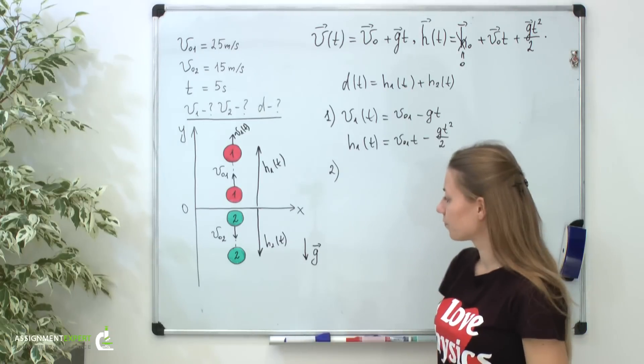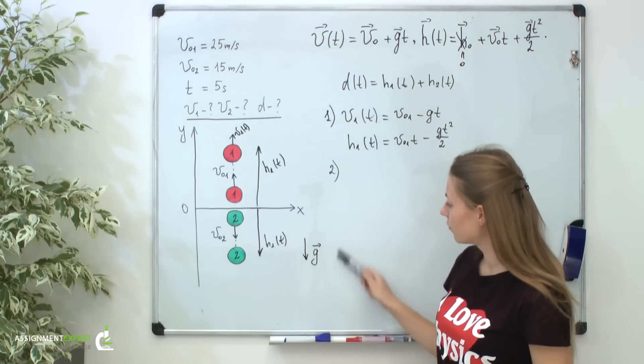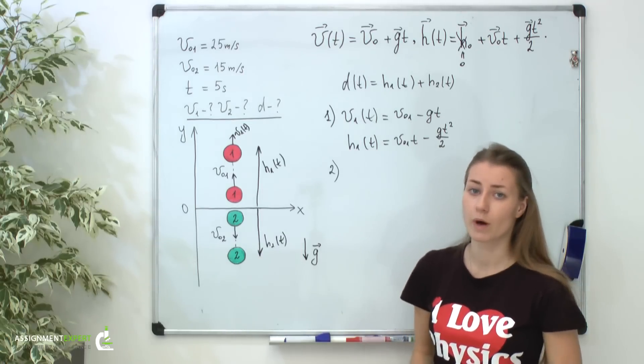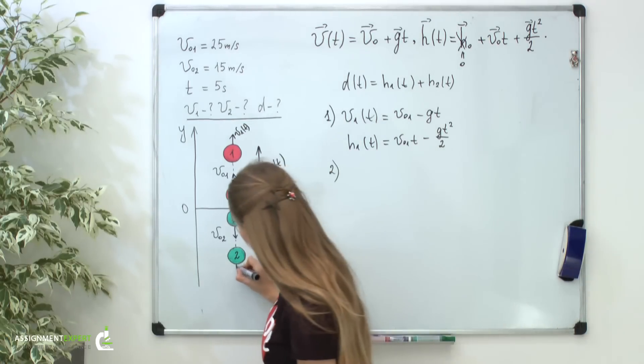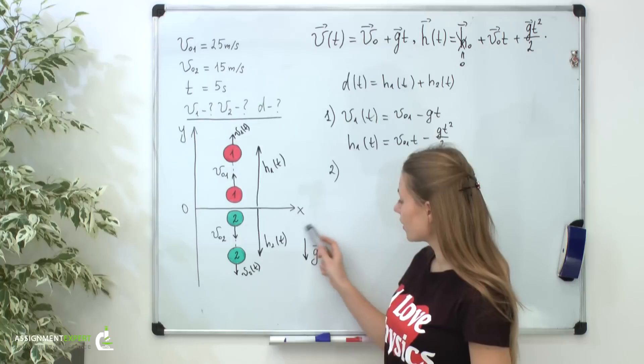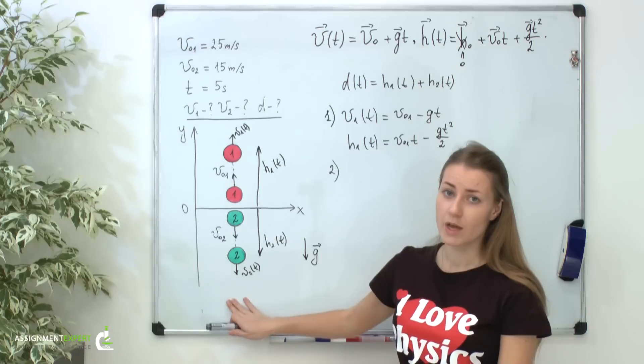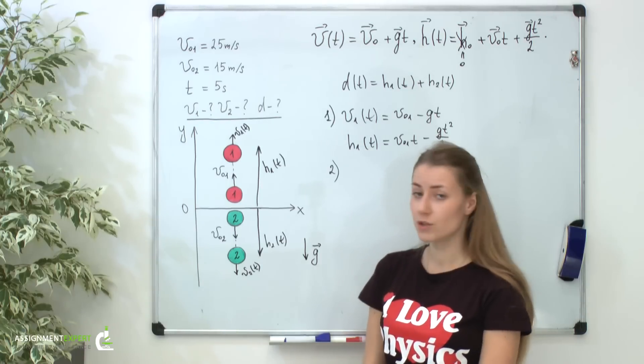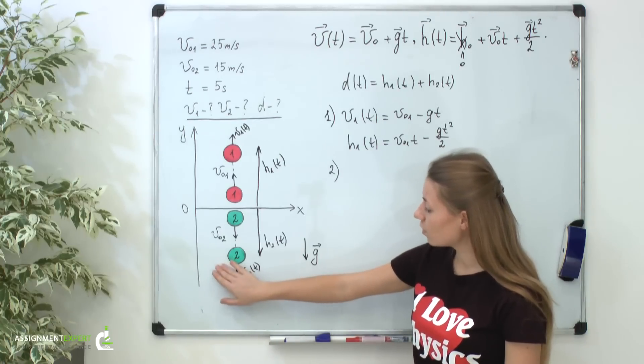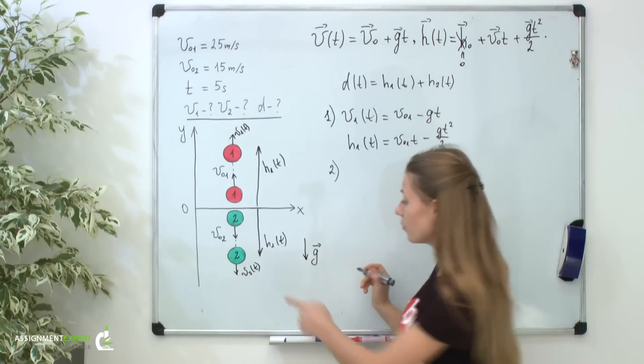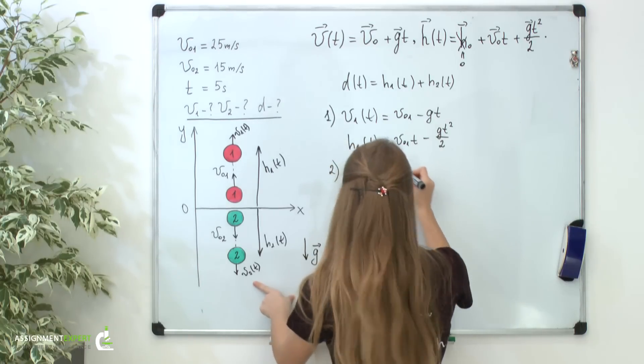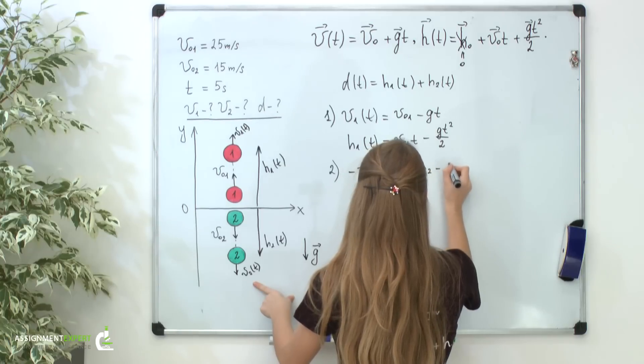Now, consider our green ball. From the picture, you can see that not only the free fall acceleration but also the initial velocity of it holds the opposite direction from the y-axis. Moreover, we see that the velocity v2 of t holds the same direction. We know that because the force of gravity acts downwards on our green ball and there are no other forces which may change its motion. So, after some time t from the moment of the throw, our green ball will remain falling down. So, the equation for it will be minus v2 of t equals minus v02 minus gt.